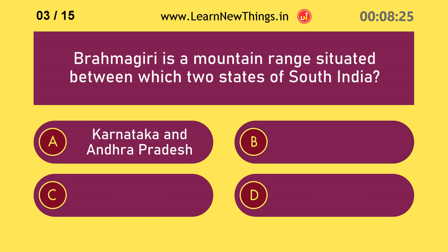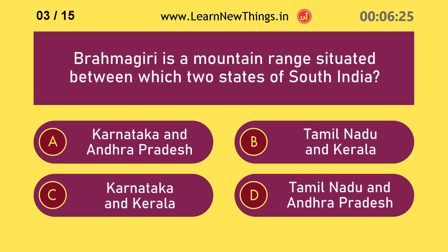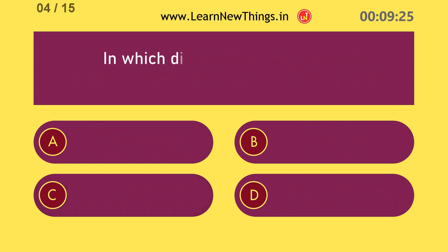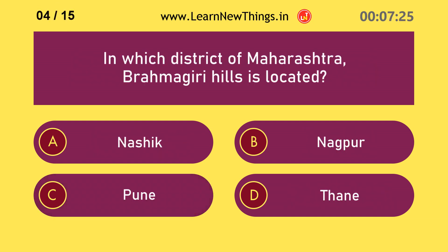Brahmagiri is a mountain range situated between which two states of South India? Karnataka and Kerala. In which district of Maharashtra is Brahmagiri Hills located? Nashik.